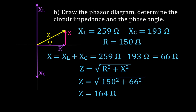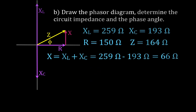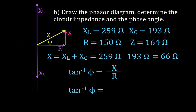Now we find the phase angle. Since the circuit is more inductive, the voltage leads the current. Using the tangent function: phi equals arctan of the opposite over the adjacent, which is X over R — arctan of 66 divided by 150. Therefore phi equals 24 degrees. That is the angle by which the voltage leads the current.